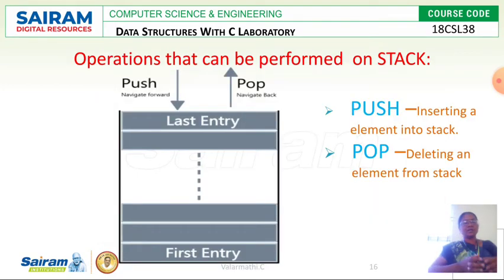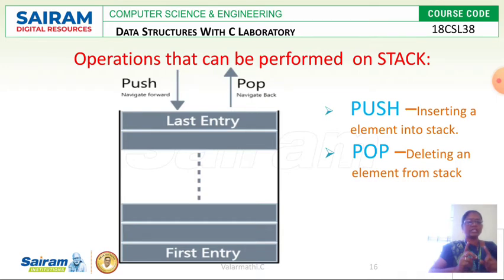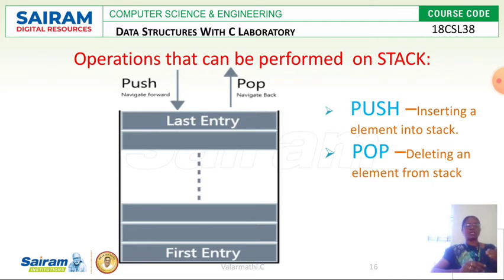Now we are going to implement this stack using integers. Using the two basic operations of stack — push and pop — the first entry is stored at the bottom and the last entry is at the top. I can only pop the last entry; I cannot delete any intermediate elements or the first entry immediately. Deletion and insertion must be done one by one, in order. We cannot intermediately insert or delete any item from the stack. This is a key highlight — and also considered a disadvantage — of the stack.